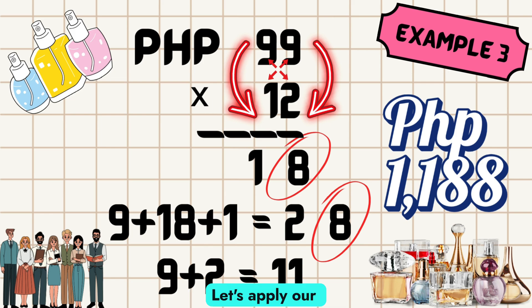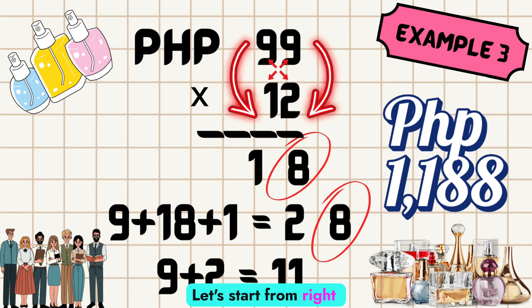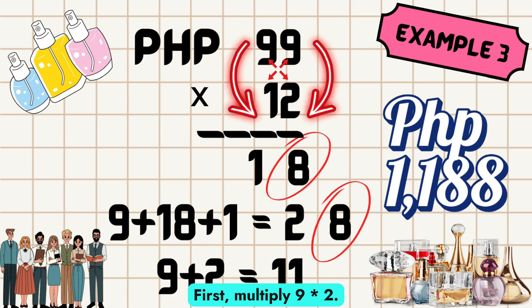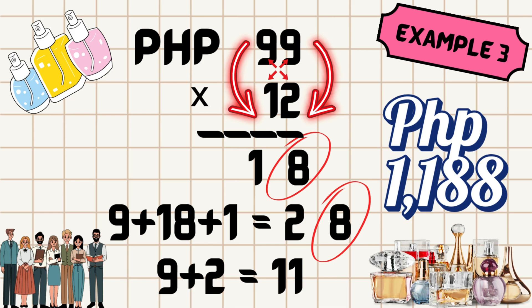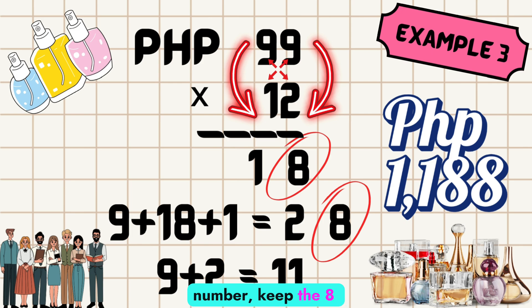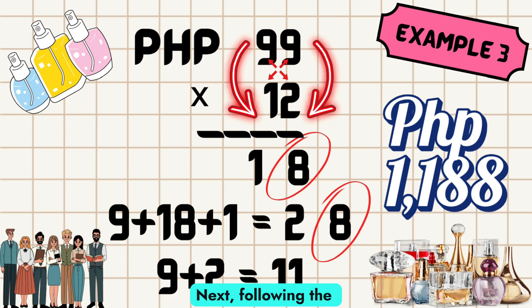Let's apply our technique again. Let's start from right to left: first multiply 9 times 2, which equals 18. Since 18 is a two-digit number, keep the 8 and carry the 1. Write 8 as the last digit.